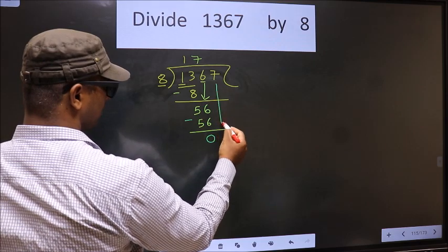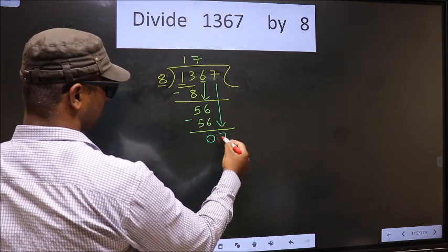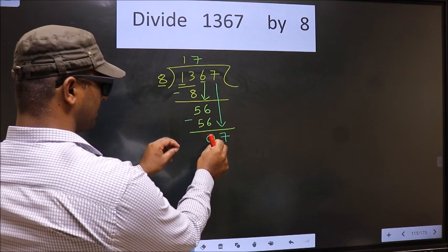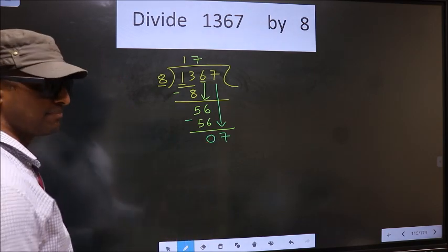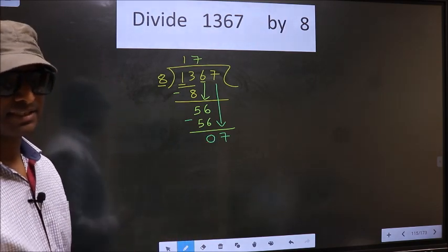Now you bring down the beside number, that is 7 down. And this is where the mistake happens. And the mistake is this.